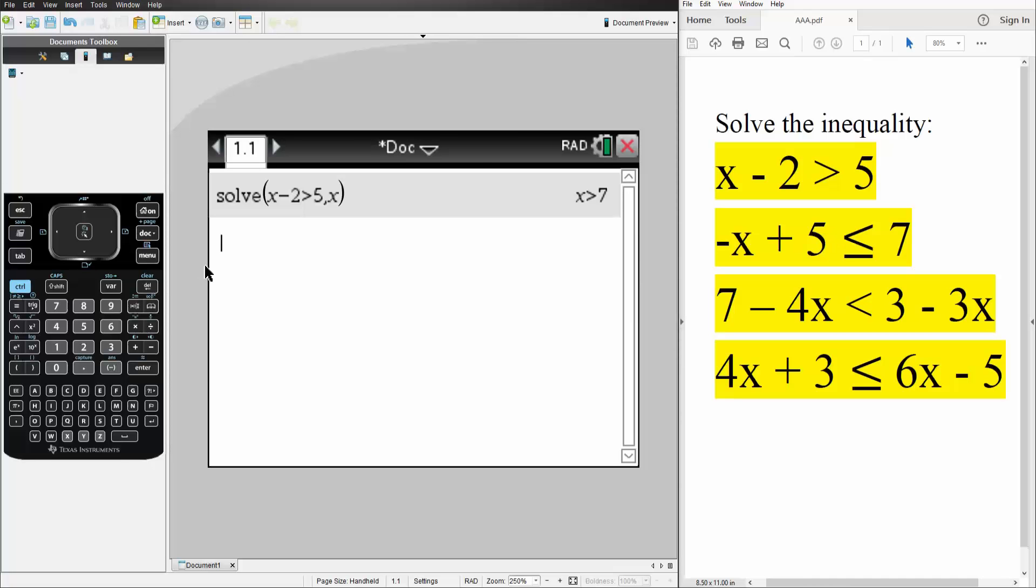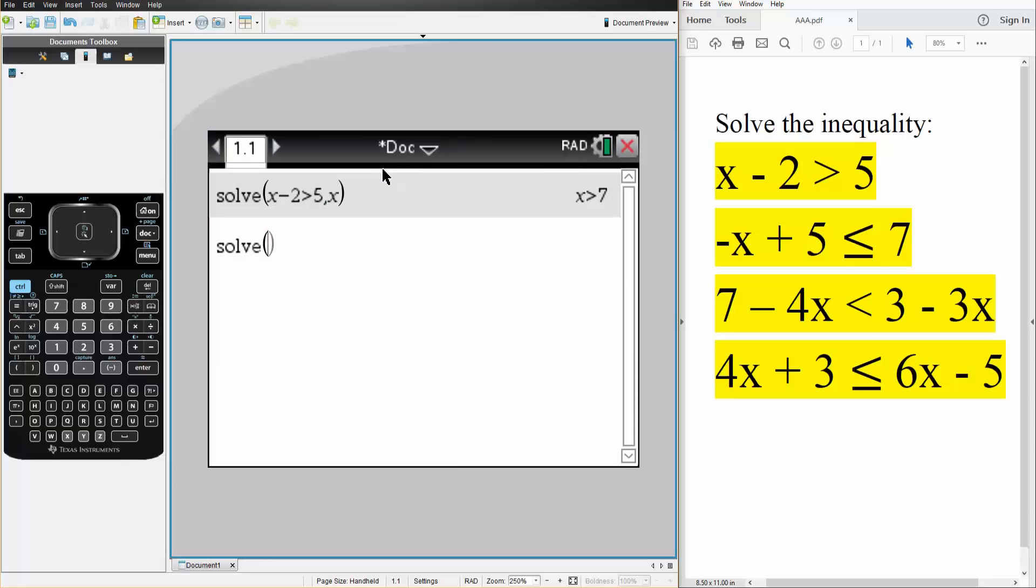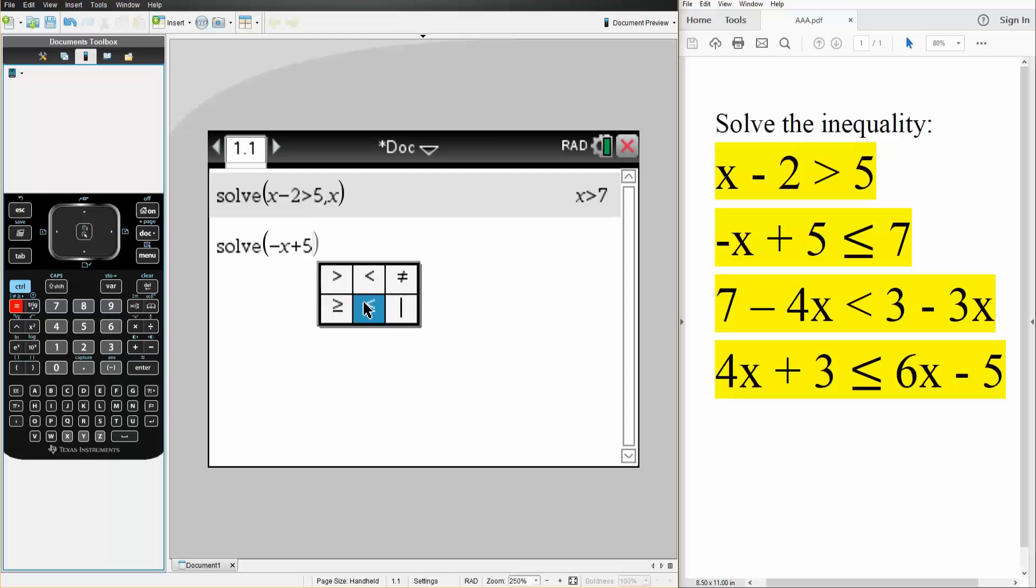Now I'll do this problem. Almost the exact same thing. So menu, algebra, solve. So we have minus x plus 5 is less than or equal to 7. So ctrl, equal. We have the less than or equal to sign. And then we have 7, comma x. Very important. And comma x, we hit enter.